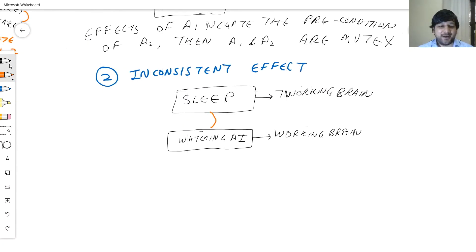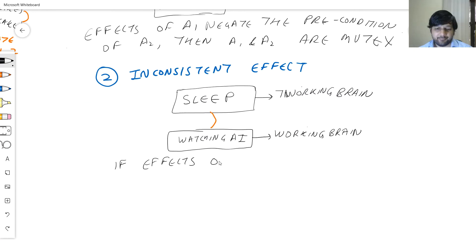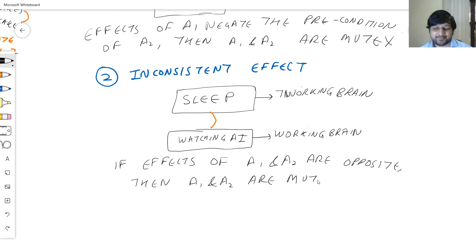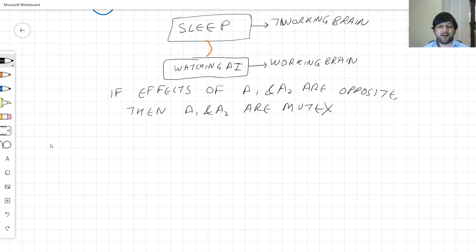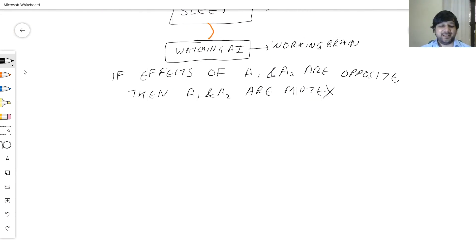So two actions are mutex to each other if the effects of A1 and A2 are opposite to each other, then A1 and A2 are mutex. That covers the second condition. There is also a third criterion, which looks at the relationship between effects and preconditions.